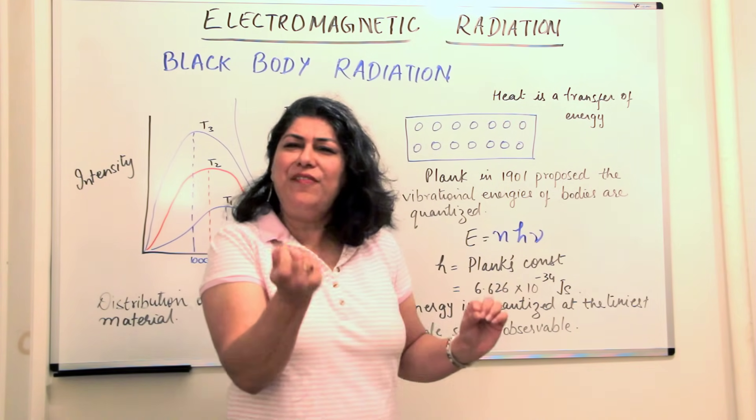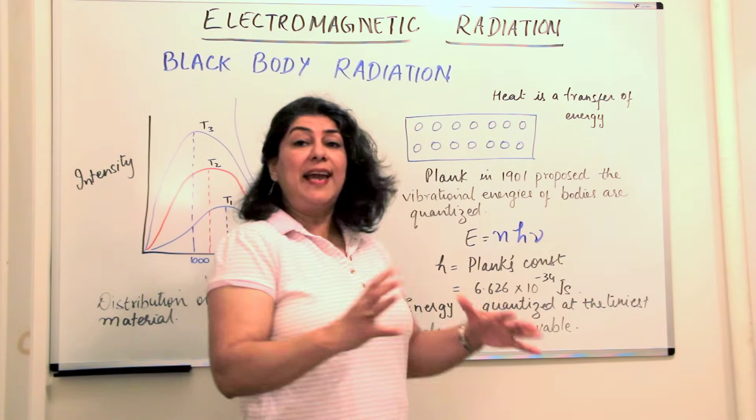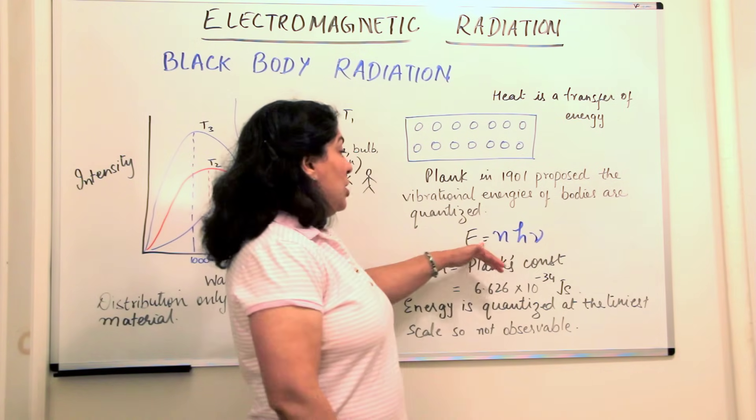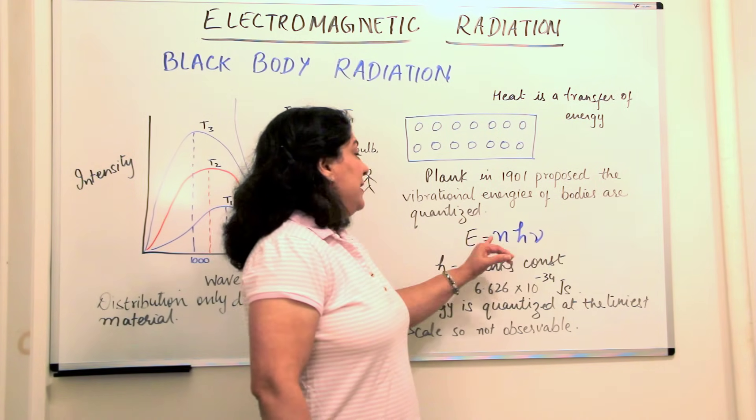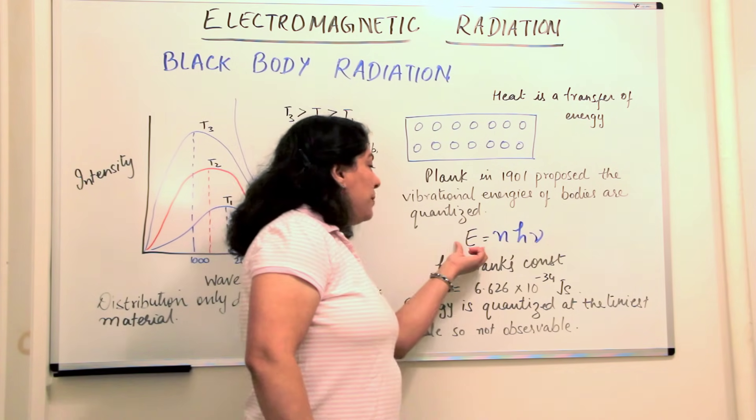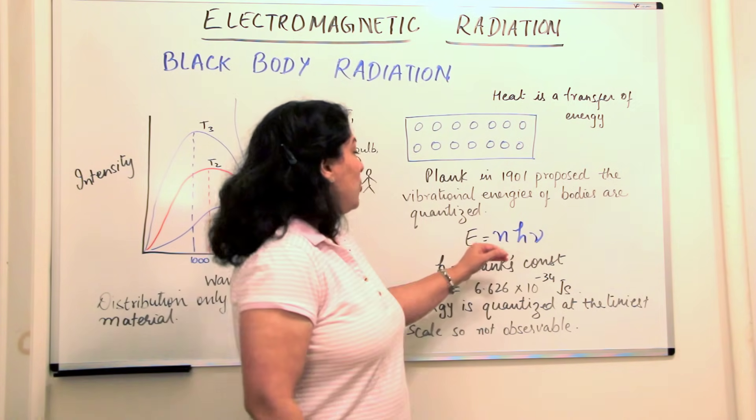The energy is quantized at a very small level and therefore this scale is not visible to us and hence we think that it is continuous. So he said that n can be any integer 1, 2, 3, 4.